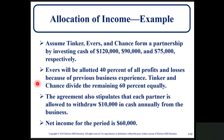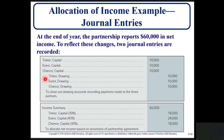Assume Tinker, Evers, and Chance form a partnership by investing cash of $120,000, $90,000, and $75,000 respectively. Evers will be allotted 40% of all profits and losses because of previous business experience, and Tinker and Chance divide the remaining 60% equally. Each partner is allowed to withdraw $10,000 in cash annually. Net income for the period is $60,000. Two journal entries are recorded at year end: a debit to each partner's capital account for $10,000 with a credit to each drawing account, to close out the drawing account recording payments made to the three partners.